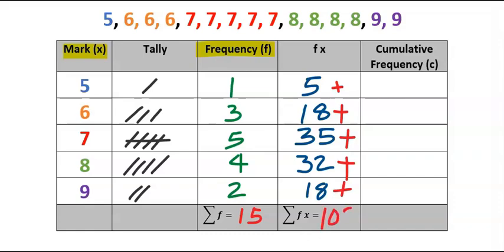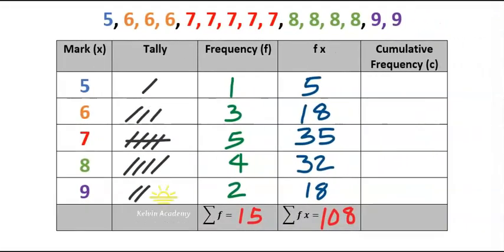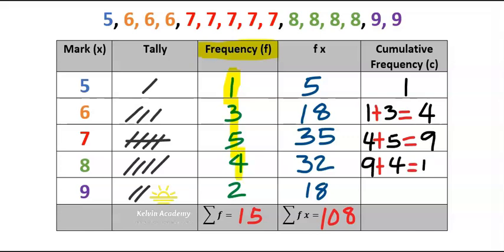Next is cumulative frequency. In the cumulative frequency column, we are going to make use of the frequency. Starting with the first one, which is 1, we write 1. Next is 1 + 3, and our answer is 4. Next is 4 + 5, and we got 9. Next is 9 + 4, and we got 13.